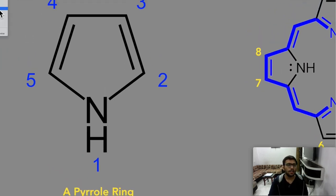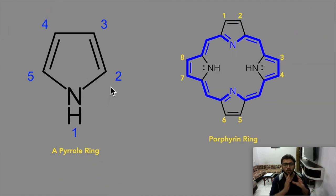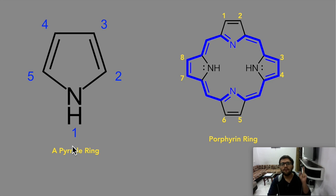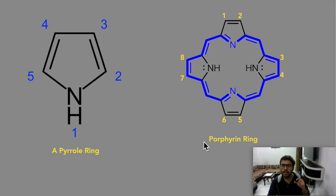This is your pyrrole ring — remember nothing else, just this pyrrole ring. Now you interlink four pyrrole rings — one, two, three, four. These four pyrrole rings are interlinked with double bond and single bond bridges, and these four pyrrole rings form a ring which is called the porphyrin ring. Pyrrole forms porphyrin.